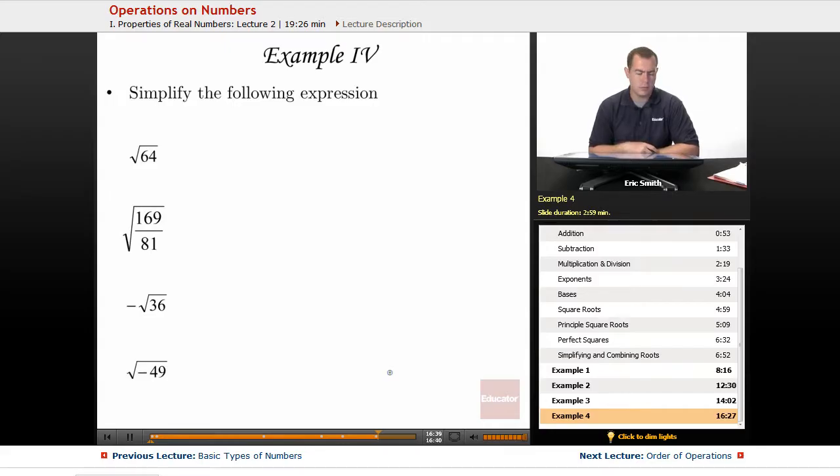The first one I have is the square root of 64. So think to yourself, what number would you have to multiply by itself in order to get 64? Well, I have a couple of options. It could be 8 and 8, that would give me 64. Or it could be negative 8 times negative 8, that would also give me 64.